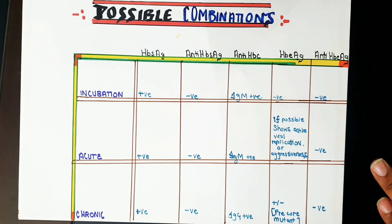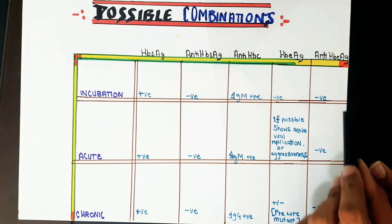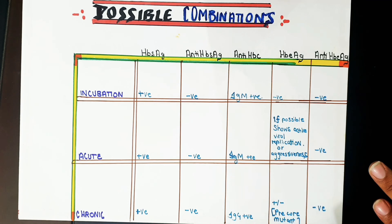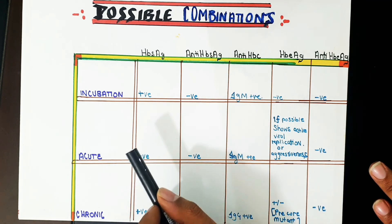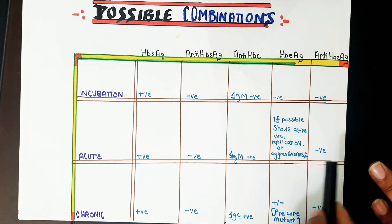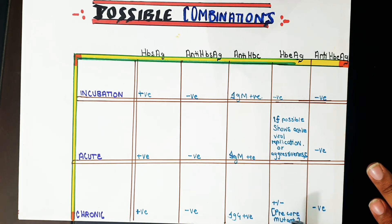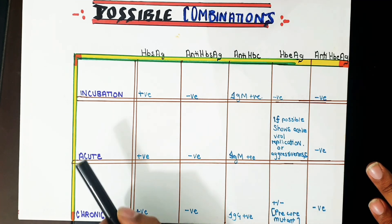Anti-HBe is negative in both the acute and chronic phases shown here. In the acute phase there is a high viral load and aggressive disease, so anti-HBe is negative. In the chronic phase, viral replication is still ongoing; HBe antigen has a high tendency to be positive in acute cases but can be positive or negative in chronic cases.